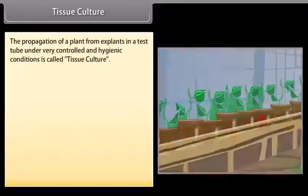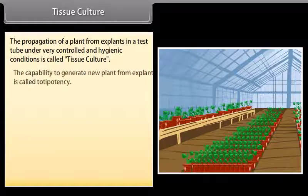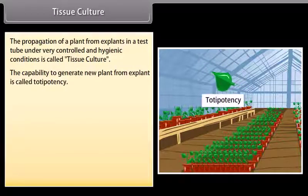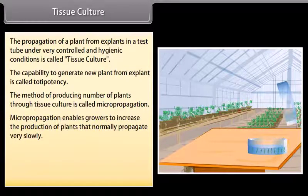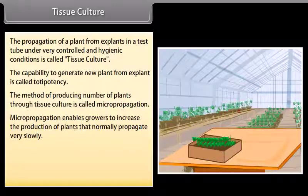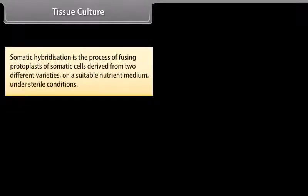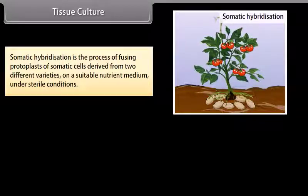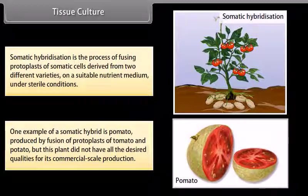Tissue culture. The propagation of a plant from explants in a test tube under very controlled and hygienic conditions is called tissue culture. The capability to generate a new plant from an explant is called totipotency. Producing plants through tissue culture is called micropropagation, enabling growers to increase production of slowly propagating plants. Plants developed through micropropagation are genetically identical to the original and are called somaclones. Somatic hybridization is the fusion of protoplasts from two different varieties; one example is pomato, produced by fusing tomato and potato protoplasts.